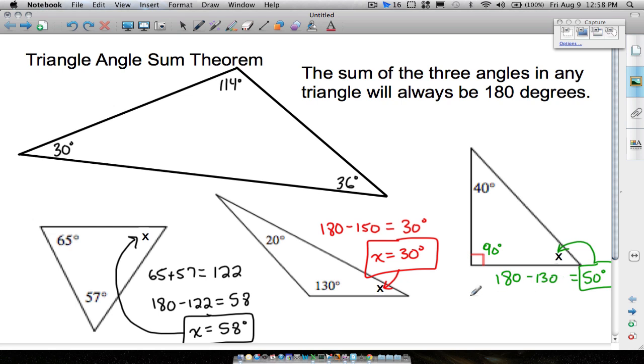And don't forget any of these problems you're doing, when you want to check your work, just go back and add up all three of your angles. For example, here, 130 plus 20 is 150, 150 plus 30 is 180 degrees. And then this one right here, 90 plus 40, that's 130, 130 plus 50, that's equal to 180 degrees.